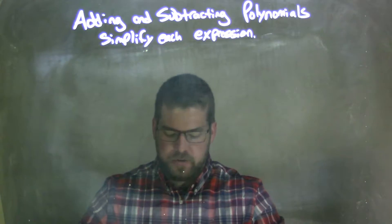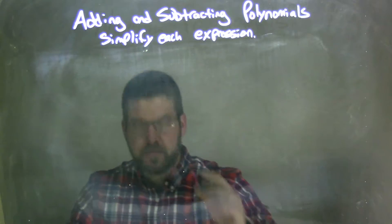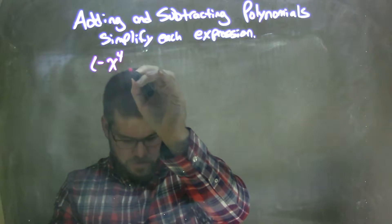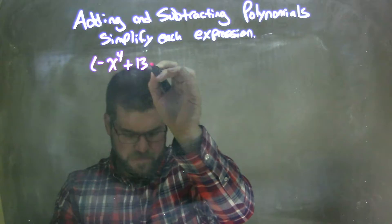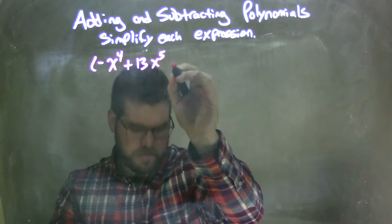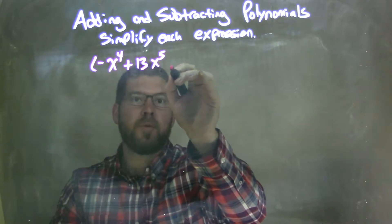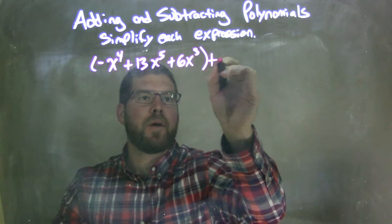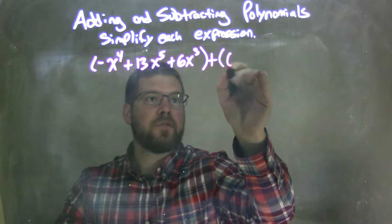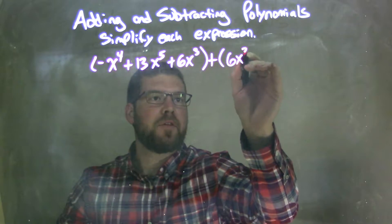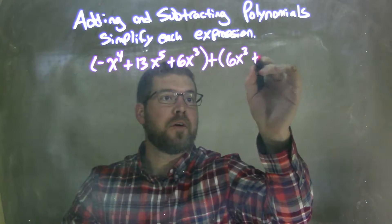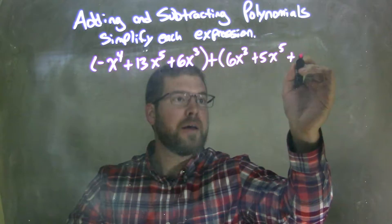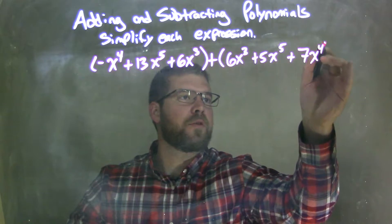So if I was given this expression: negative x to the fourth plus 13x to the fifth plus 6x to the third, in parentheses, plus in parentheses: 6x to the third plus 5x to the fifth plus 7x to the fourth.